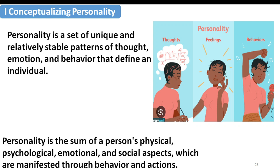The physical self - color, height, appearance, nativity, gender, the age group you belong to, the society, the economic strata, the geography, the culture you belong to - all these contribute to your psychological, physical, emotional, and social aspects. All these put together contribute significantly and substantially to the making of your personality, which is why we say it's a sum of a person's physical, psychological, emotional, and social aspects, manifested through behavior and actions.